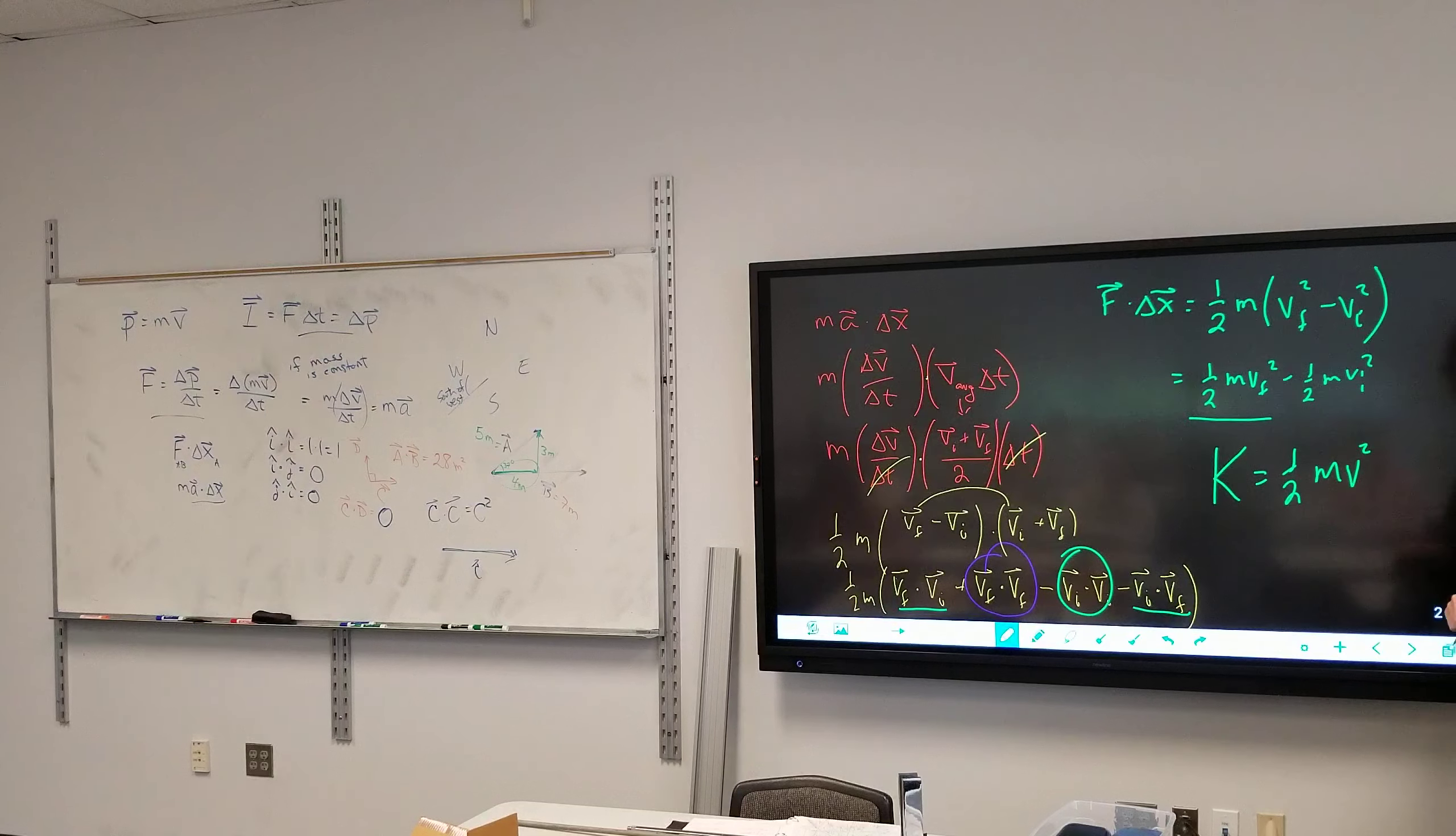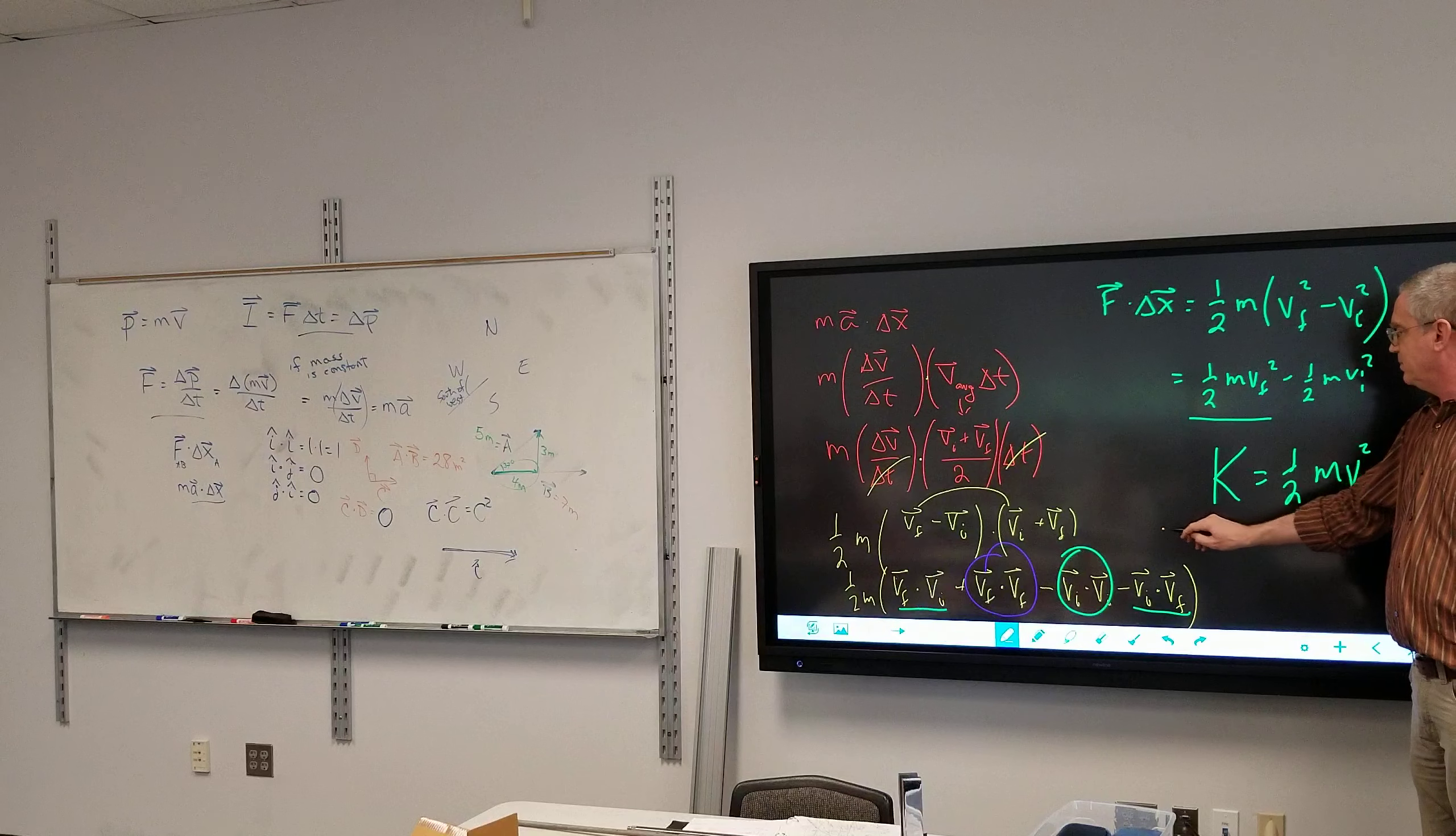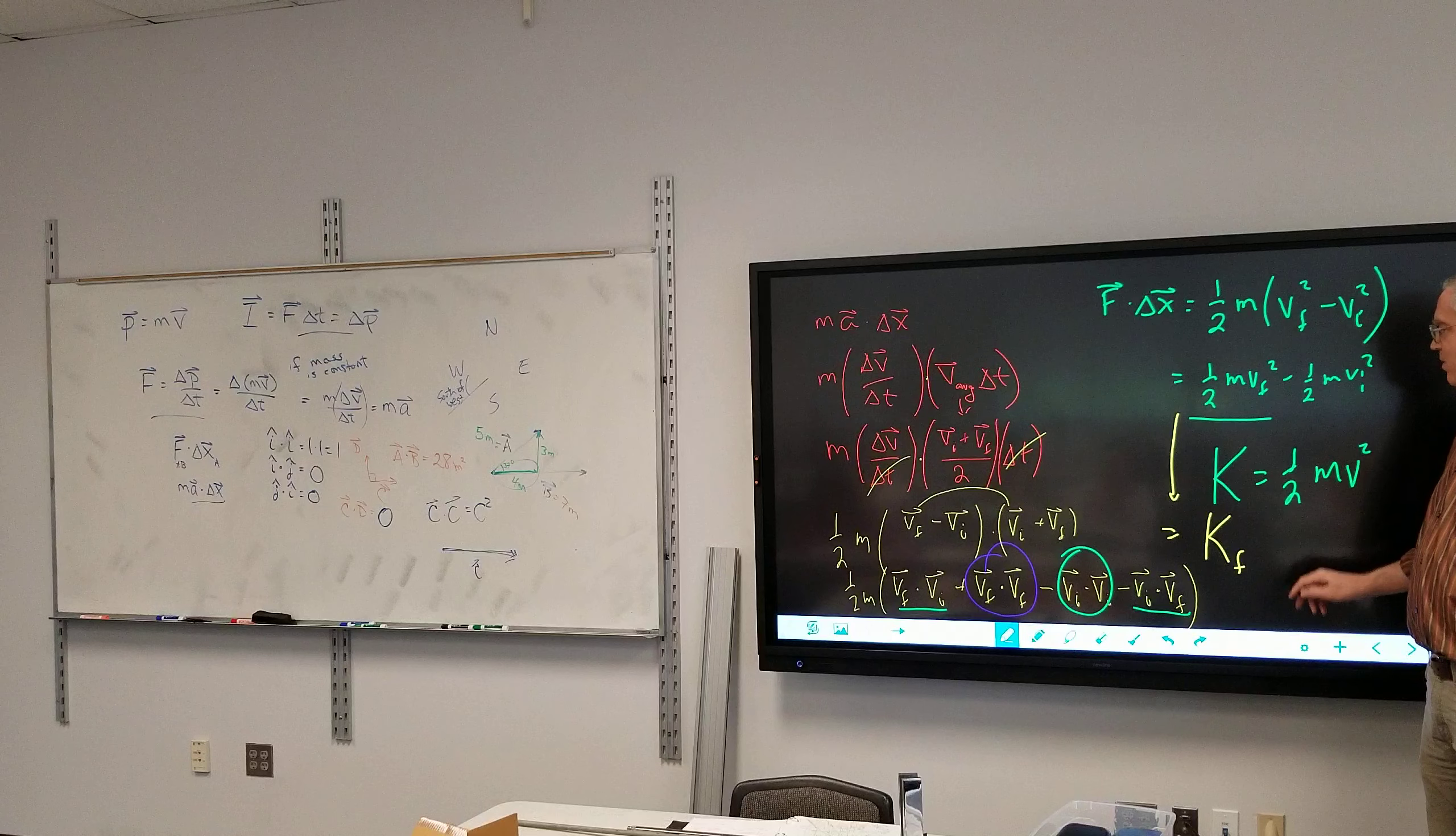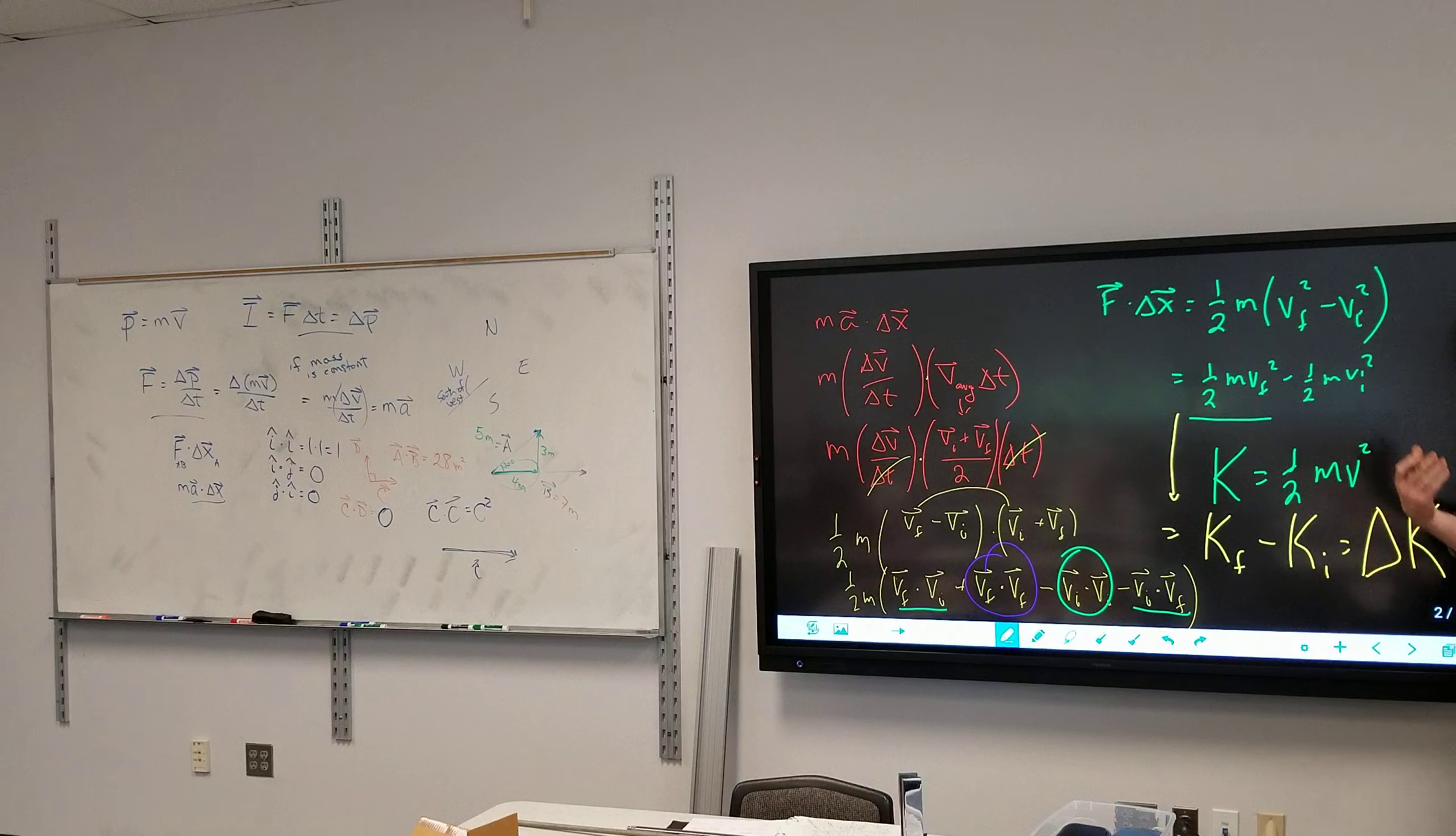I'll explain why it's K in just a moment. So this now becomes whatever that final K value is minus that initial K value, which is just the change in this K thing.